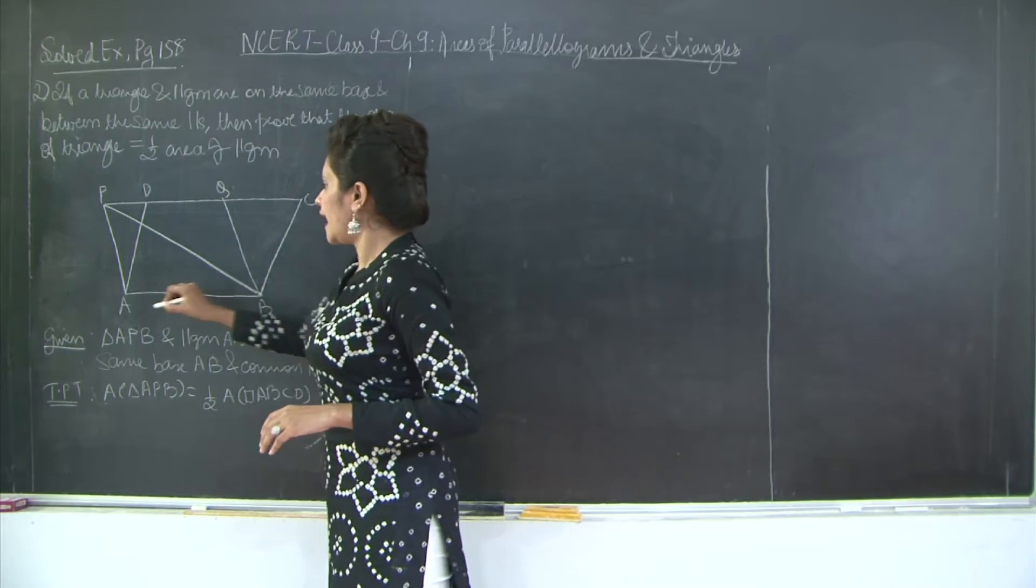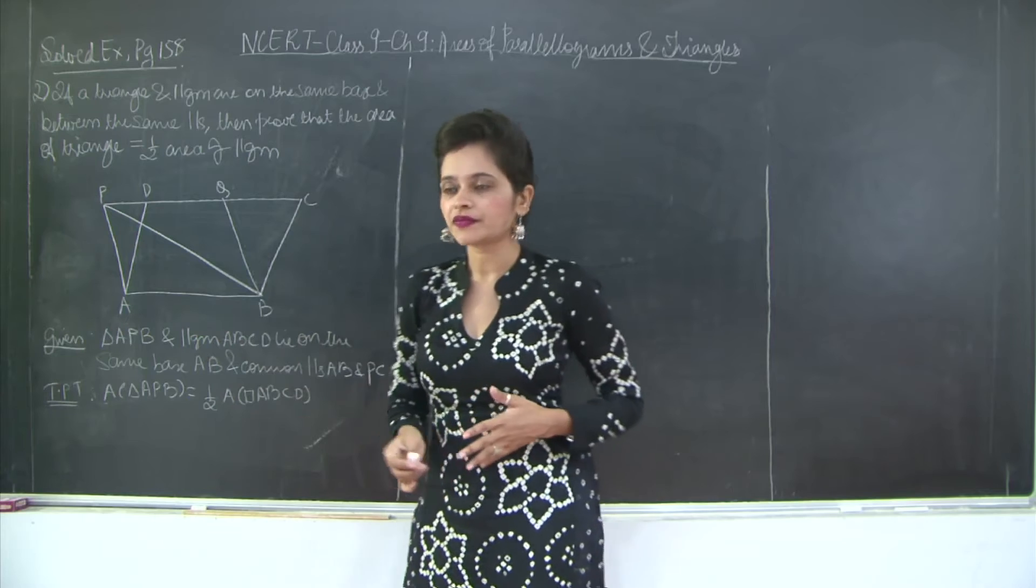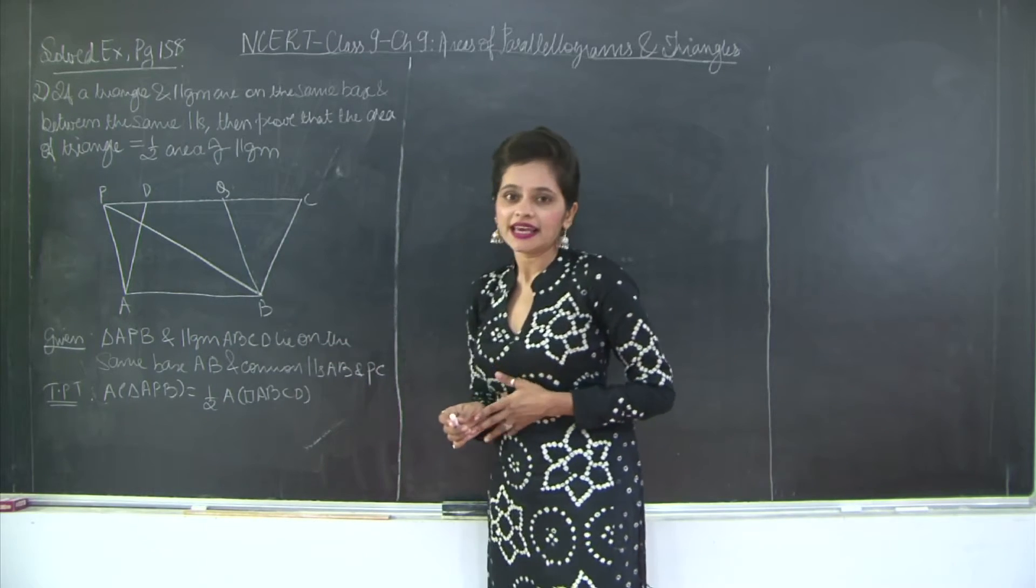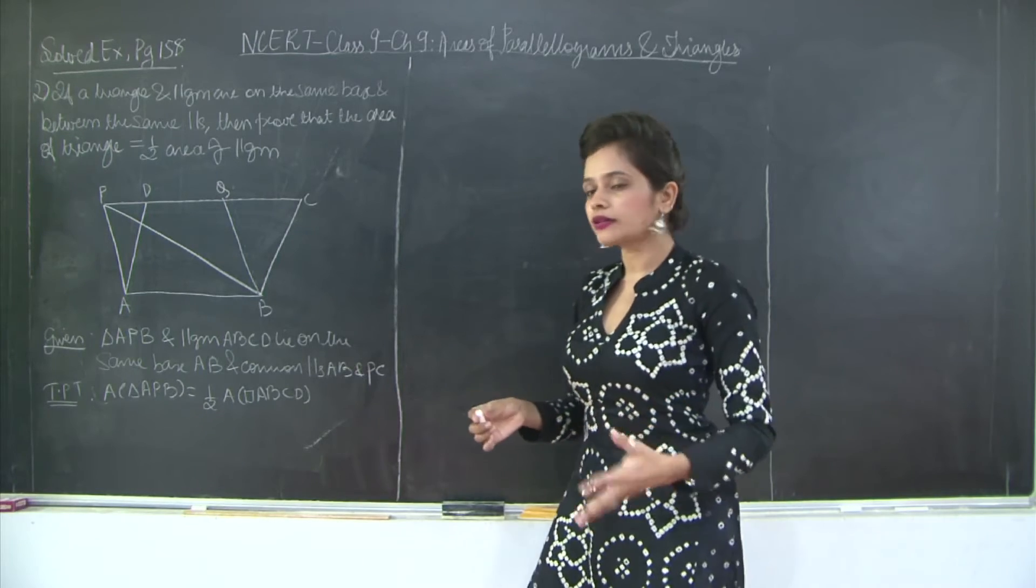Now this parallelogram APQB and ABCD, they lie on the same base AB and between the common parallels AB and PC. Therefore, the areas of the two parallelograms are equal. Let's write this down.